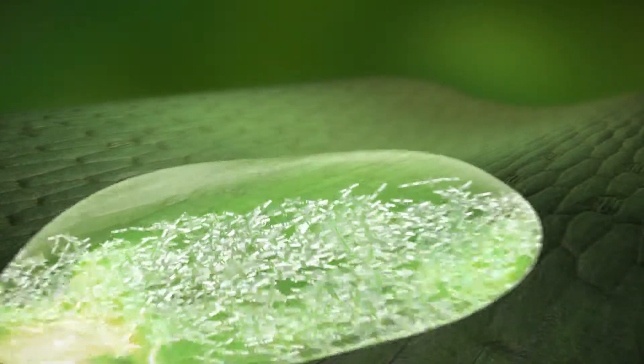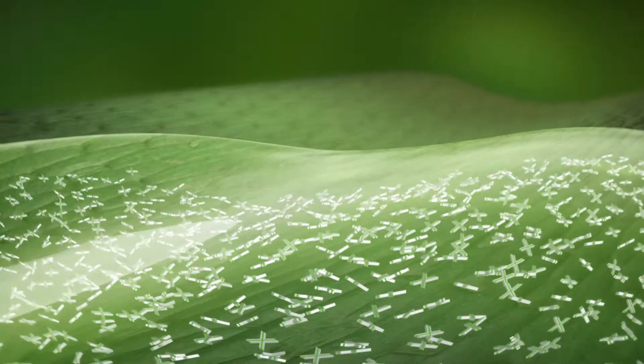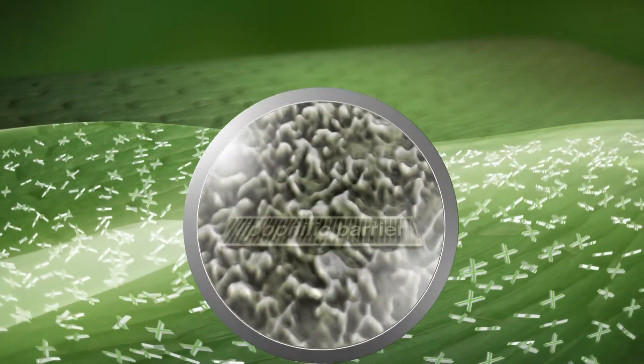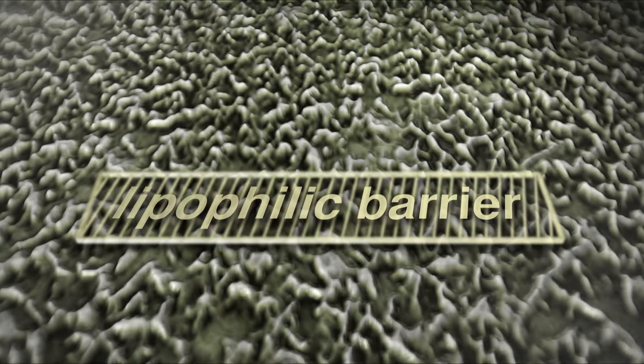The first barrier that Xemium has to overcome on its way to the fungus is the leaf surface. It's covered by a water-repellent lipophilic wax layer.